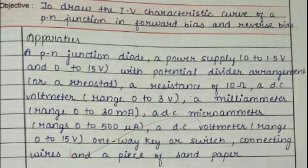For this practical we'll need the following things: a PN junction diode, a power supply of 1 to 1.5 volts and 0 to 15 volts with a potential divider arrangement or a rheostat, a resistance of 10 ohms, a DC voltmeter range 0 to 3 volts, a milliammeter range 0 to 30 milliamperes, a DC microammeter range 0 to 500 microamperes, a DC voltmeter range 0 to 15 volts, a one-way key or switch, connecting wires, and a piece of sandpaper.